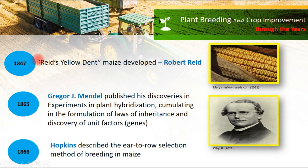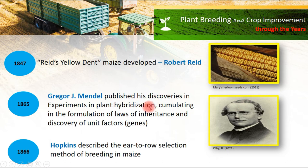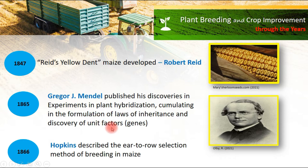In 1847, Robert Reid developed the Reid Yellow Dent Maize. The man who published discoveries and experiments in plant hybridization is none other than Gregor J. Mendel in 1865. He also contributed to the formulation of the laws of inheritance and the discovery of genes, also known as the unit factor.